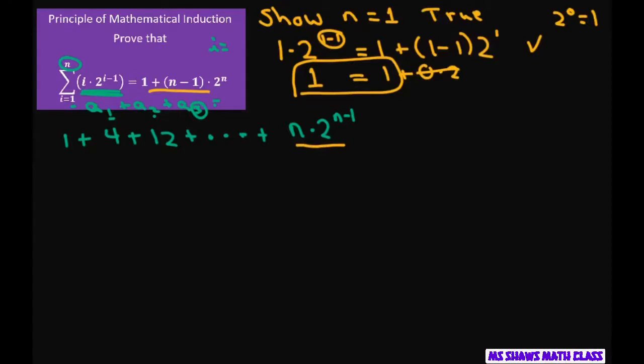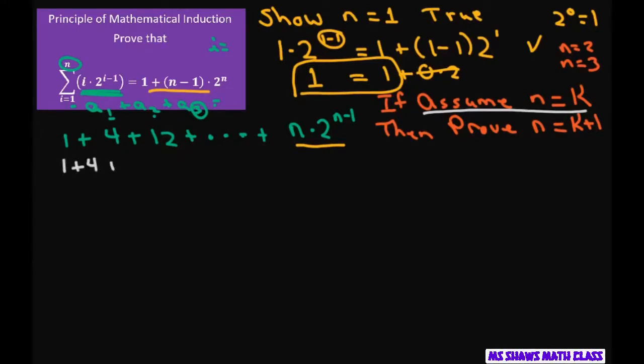So now we're going to assume it works. It's true for n equals k. So if it is true for n equals k, then we need to prove that it's true for all next terms or k plus 1s. So any term we add to this, it's going to work. Like for n equals 1, n equals 2, n equals 3, and so forth. So the first thing we're going to do is this part. And that just means if it's true, then we're going to change all these n's to k. So we have 1 plus 4 plus 12 plus dot dot dot plus k times 2 to the k minus 1 power equals 1 plus k minus 1 times 2 to the k. So that's our assumption.